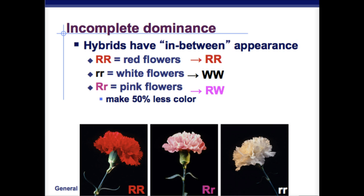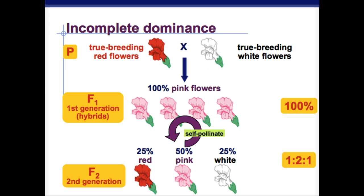First we're going to talk about incomplete dominance. Incomplete dominance is when there is a blending between two different dominant traits. So instead of just getting red or white, there's a middle blend of getting pink when you blend the two. If you look at the P generation, you have the red and the white.